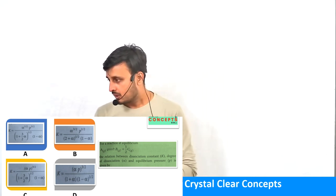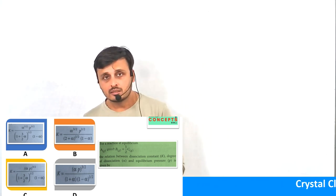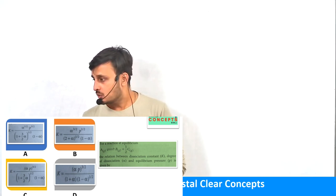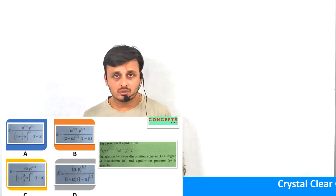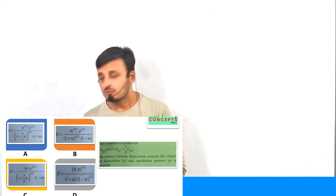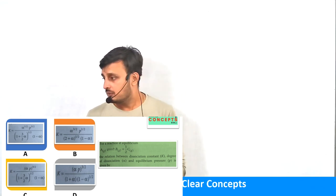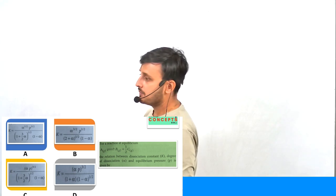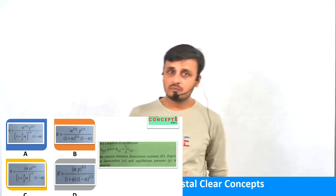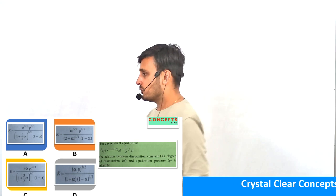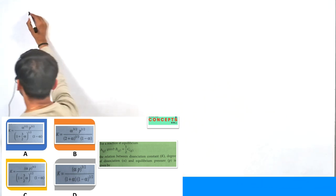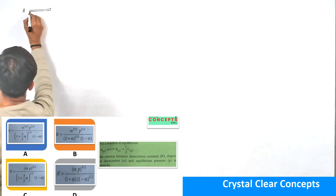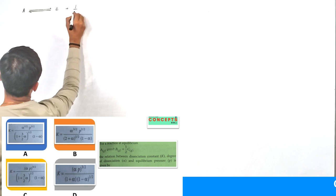The question is: for a reaction at equilibrium, A converts to one mole of B and half mole of C. We have to find the relationship between the dissociation constant KP and the dissociation fraction alpha with respect to the equilibrium pressure P. There are four options given and we have to find one correct option. We are given that A is in equilibrium with B and half mole of C.